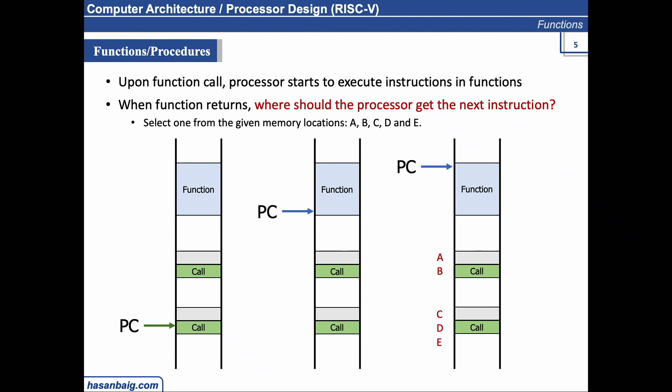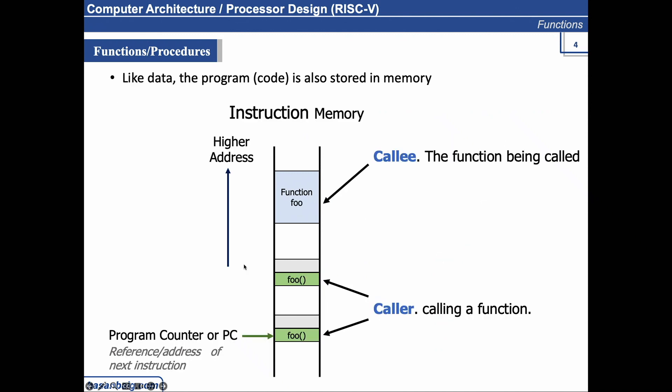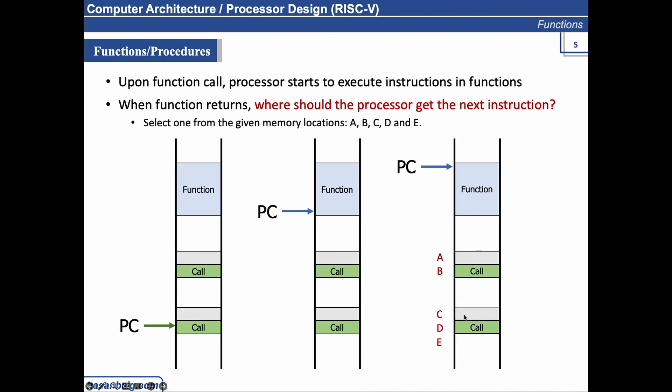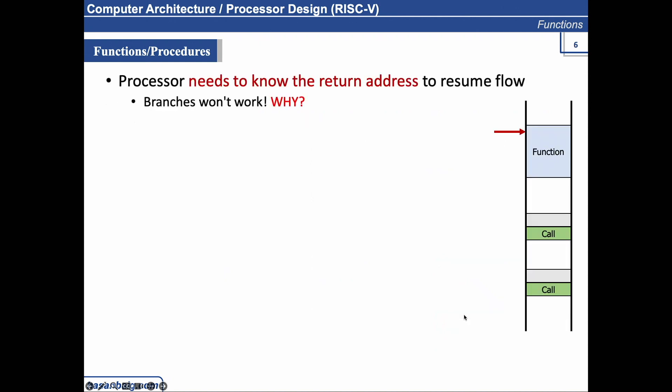The PC jumps back to C because instructions are arranged from bottom to top, so the next instruction to be executed after the function call is placed at location C. To make the transition back to where the function was called from, we need to know the return address. We cannot use a simple branch instruction like BEQ x0, x0 with a label to jump back, because if we have multiple callers and hardcode the label, it will always jump back to the same location — and that doesn't work with multiple callers.